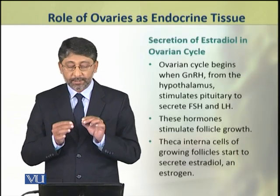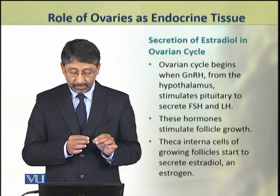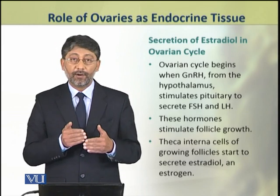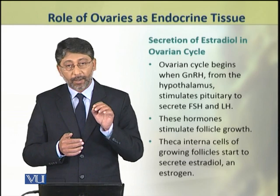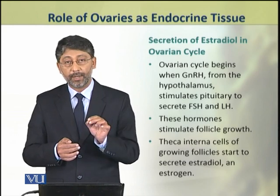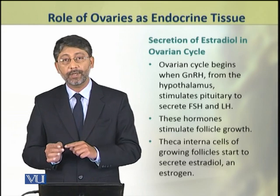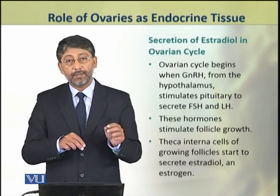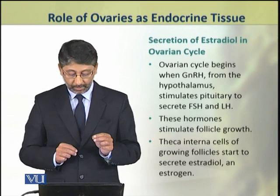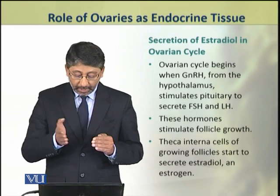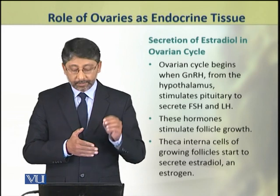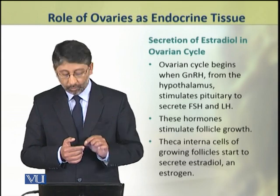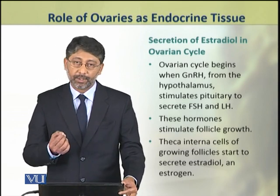Estradiol is secreted during the ovarian cycle, which begins with the release of gonadotropin releasing hormone from the hypothalamus. This gonadotropin releasing hormone stimulates the pituitary to release FSH and LH. These two hormones are involved in the stimulation of follicle growth. When the follicles are growing, their theca interna cells start to secrete estradiol, which is an estrogen.